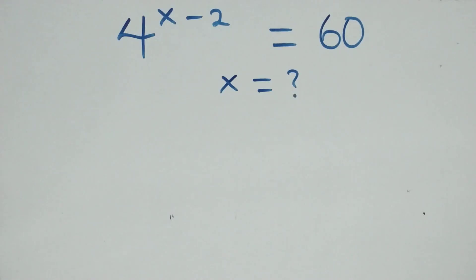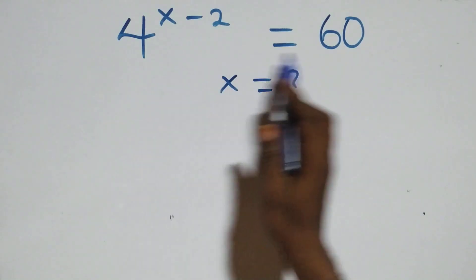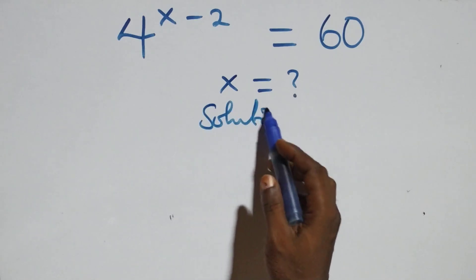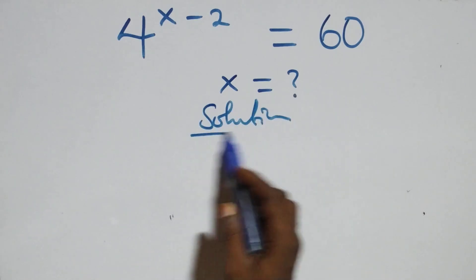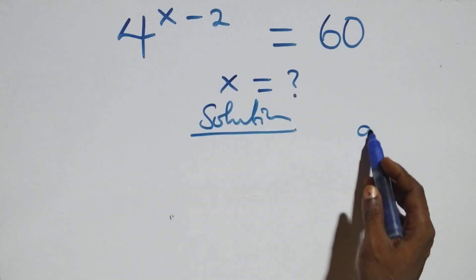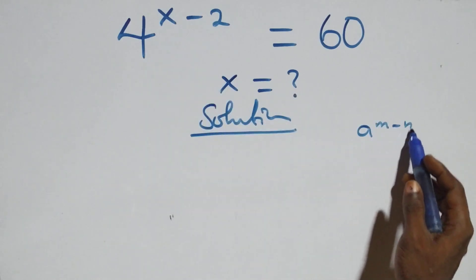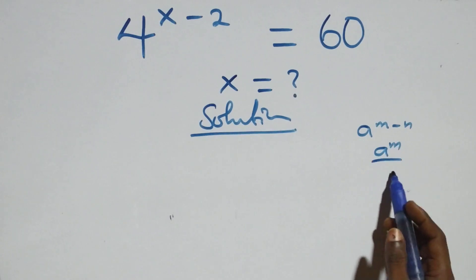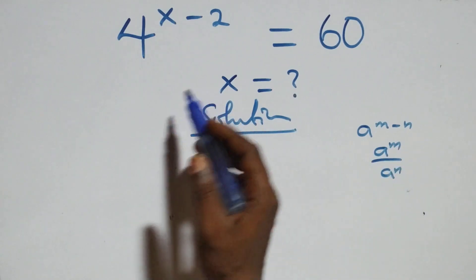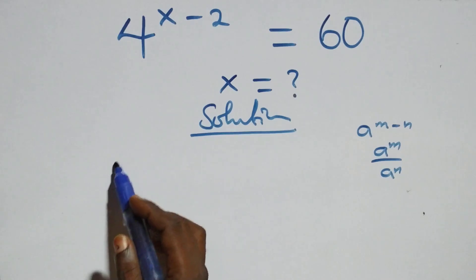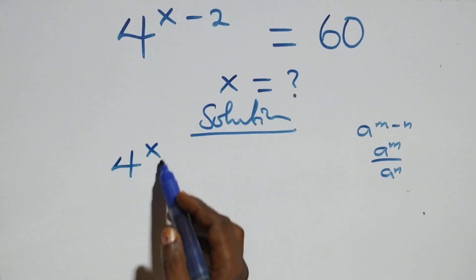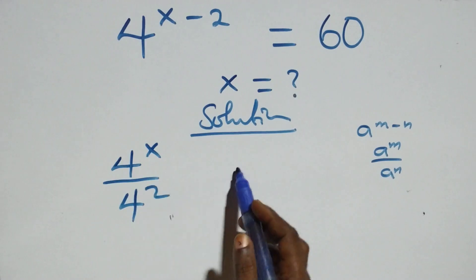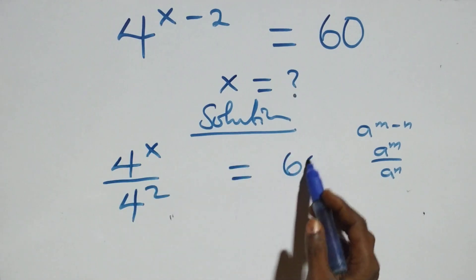Hello and welcome. We're going to solve a nice exponential equation. The rule we use is: a raised to power m minus n is the same as a raised to power m over a raised to power n. We have four raised to power x over four squared equals sixty.